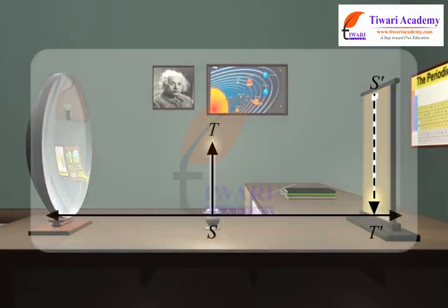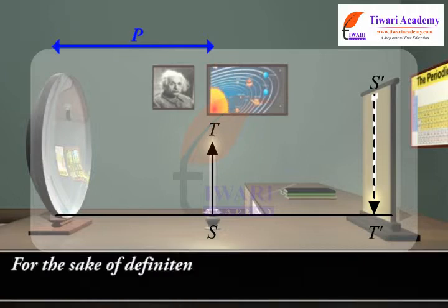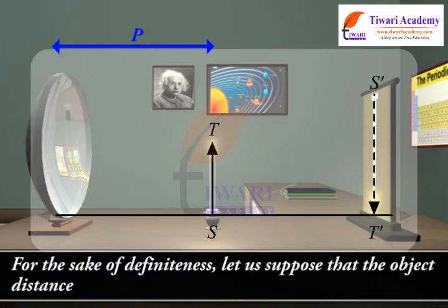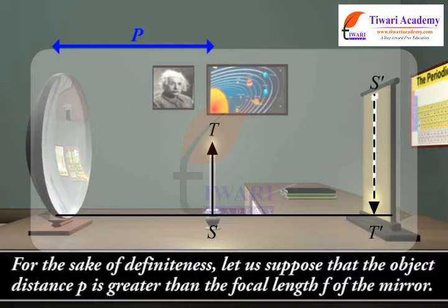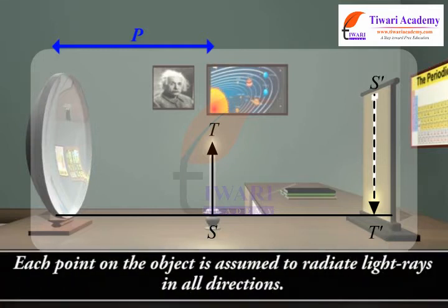Consider an object ST which is placed at a distance P from a concave spherical mirror. For the sake of definiteness, let us suppose that the object distance P is greater than the focal length F of the mirror. Each point on the object is assumed to radiate light rays in all directions.